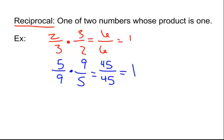So that's what a reciprocal is. You take two numbers, you multiply them, and the product — meaning the answer to a multiplication problem — is one. Make sure you get that down.